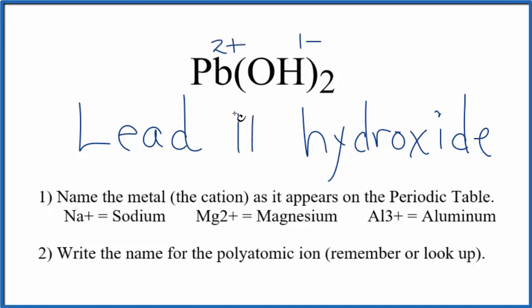To show that in the name, we put a Roman numeral two in parentheses. So the name for Pb(OH)2 is lead two hydroxide.